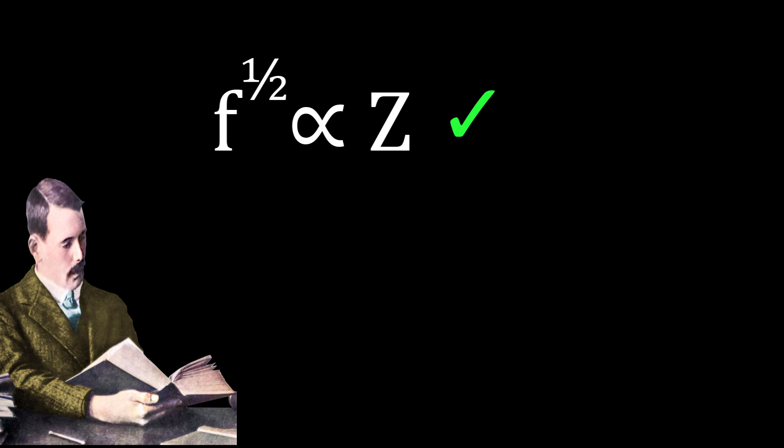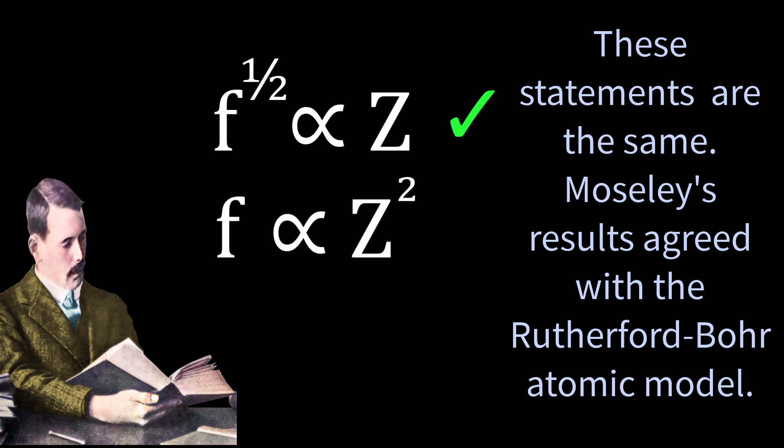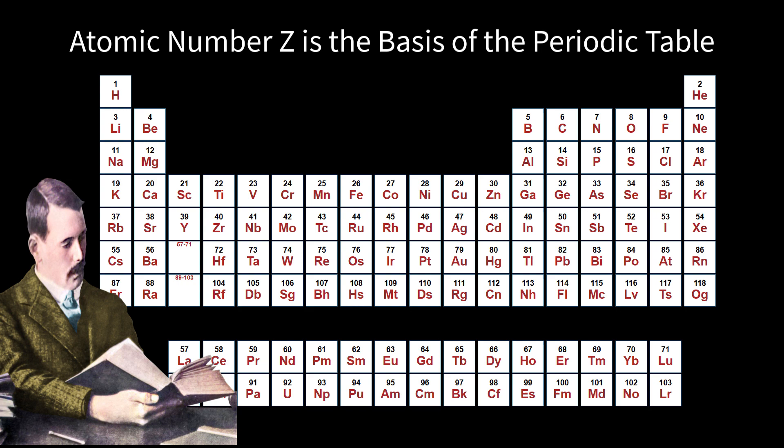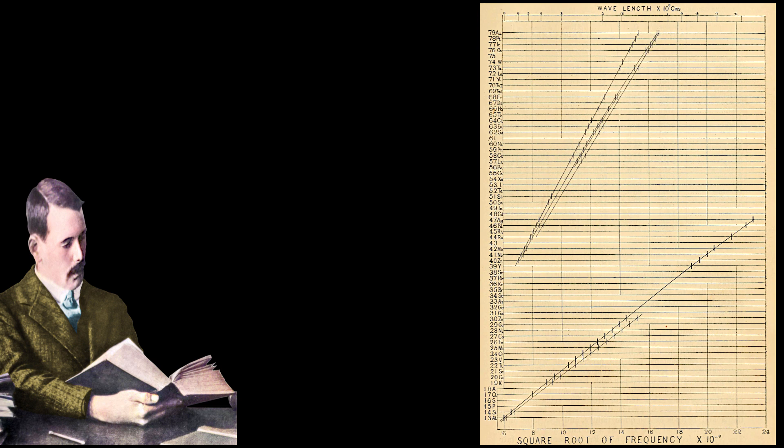The Rutherford-Bohr atomic model required that the energies of deeply bound electrons and hence X-ray frequencies be proportional to Z-squared, the charge on the nucleus squared. Therefore, adding one unit of nuclear charge to an element's atoms led to the next element in the periodic table. Moseley had untangled the problem of atomic weights for elements versus chemical properties.